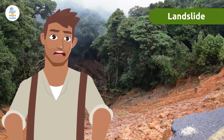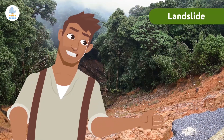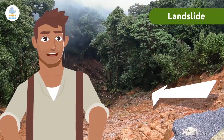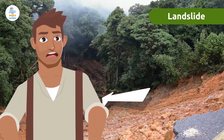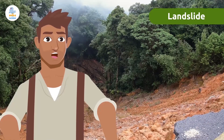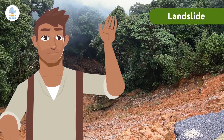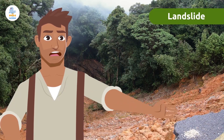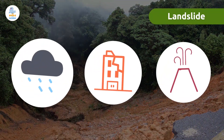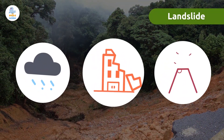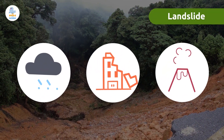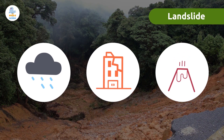A landslide is the movement of a large mass of earth or rock sliding down from higher elevation to a lower elevation. Landslides can be caused by different reasons such as heavy rains, earthquakes, volcanoes, or simply by unstable terrain.